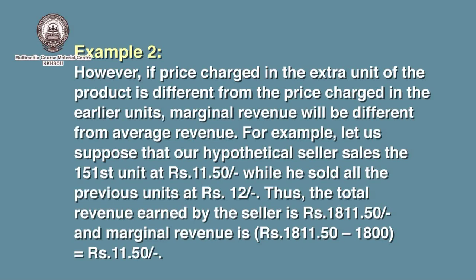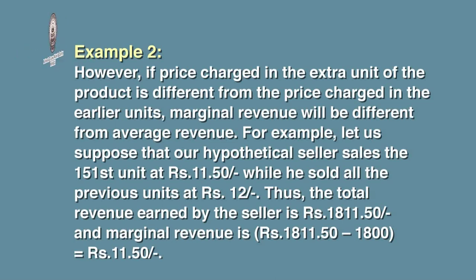Example 2: However, if the price charged for the extra unit of the product is different from the price charged for the earlier units, marginal revenue will be different from average revenue. For example, suppose our hypothetical seller sells the 151st unit at rupees 11.50, while he sold all the previous 150 units at rupees 12. Thus, the total revenue earned by the seller is rupees 1811.50 after selling the 151st unit, and the marginal revenue is therefore rupees 1811.50 minus rupees 1800, that is rupees 11.50. In the next video, we shall discuss the relationship between total revenue, average revenue, and marginal revenue.